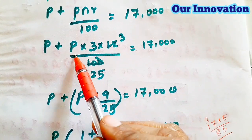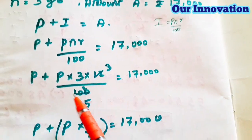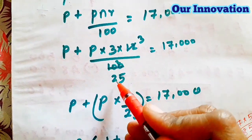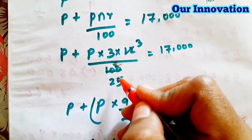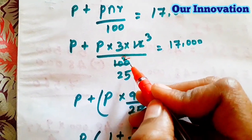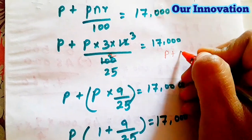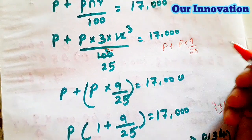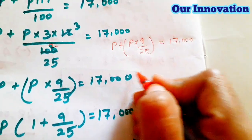Substituting: P + PNR/100 = 17,000. Now substituting n = 3 and r = 12: P + P × 3 × 12 / 100 = 17,000. Simplifying: 3 fours are 12, 2 fours are 8, balance 2, 5 fours are 20, 3 fours are 12. So P + P × 9/25 = 17,000. Taking P as common factor.